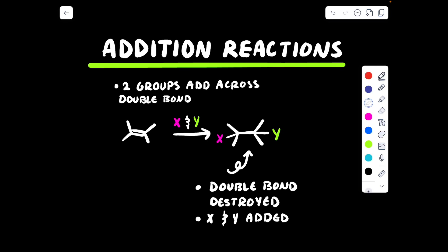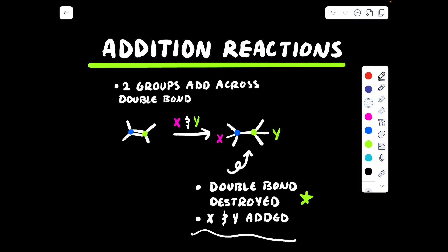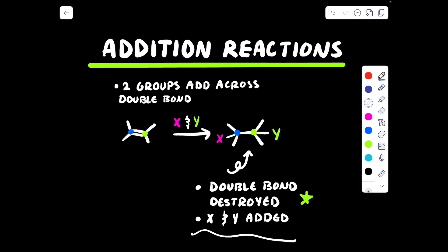So, what is an addition reaction? Well, think addition means to add something. What are we adding? We are going to be adding two groups — could be two different groups or two of the same group — to a double bond, where each carbon that is part of the initial double bond will have one group added to it. X has added to the blue carbon and Y has added to the green carbon. In the product, we no longer have a double bond — the double bond is destroyed — and X and Y, these arbitrary groups, have been added to the carbons that were initially part of the double bond.